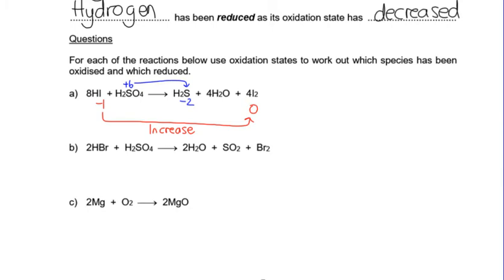Iodine is being oxidized and sulfur is going down. Sulfur is being reduced. So iodine is being oxidized and the sulfur is being reduced.